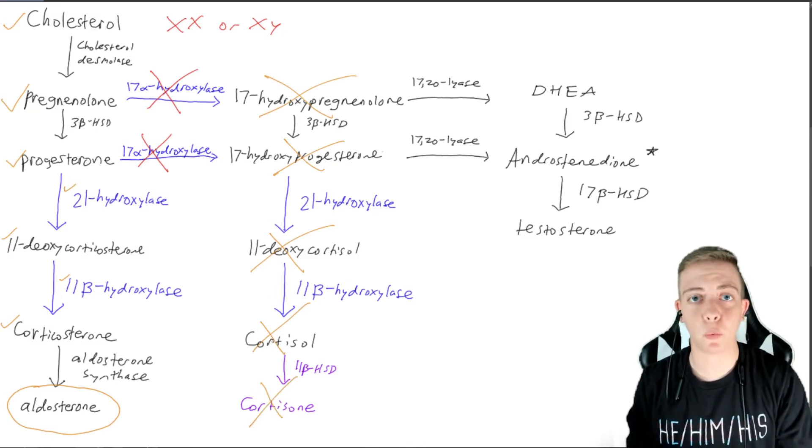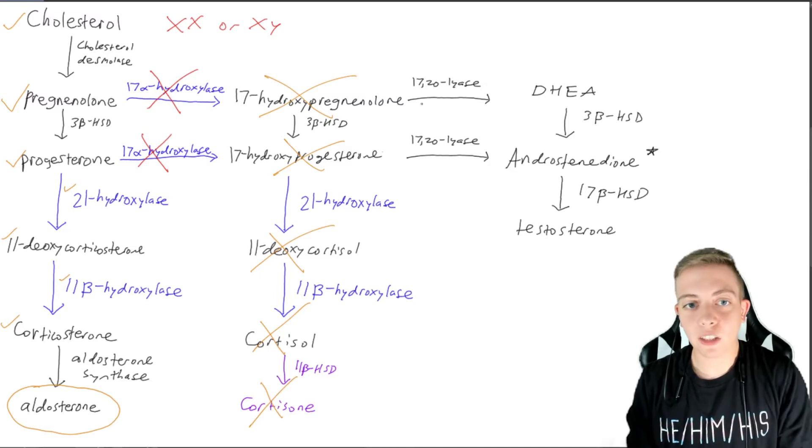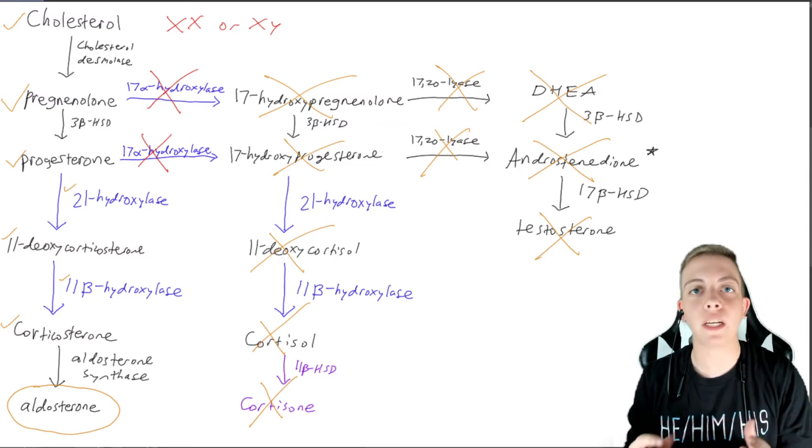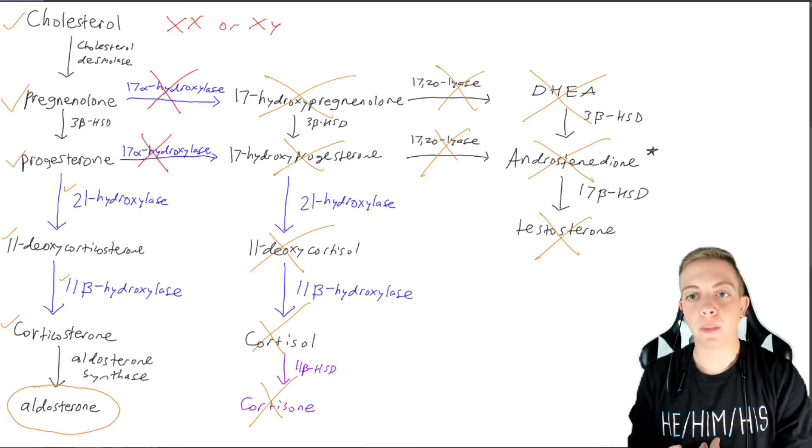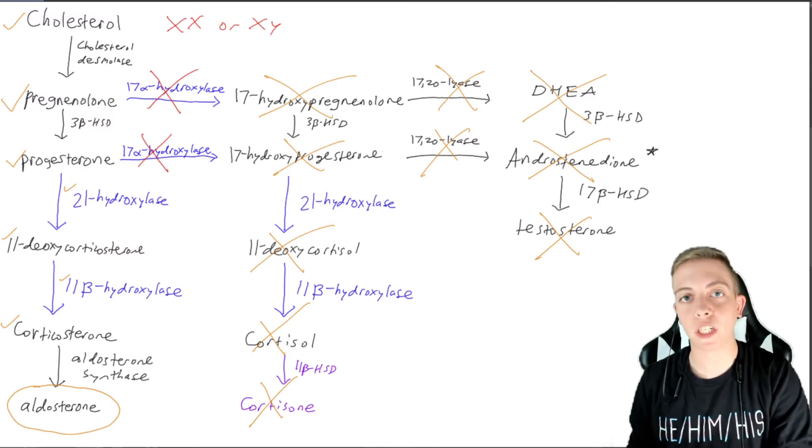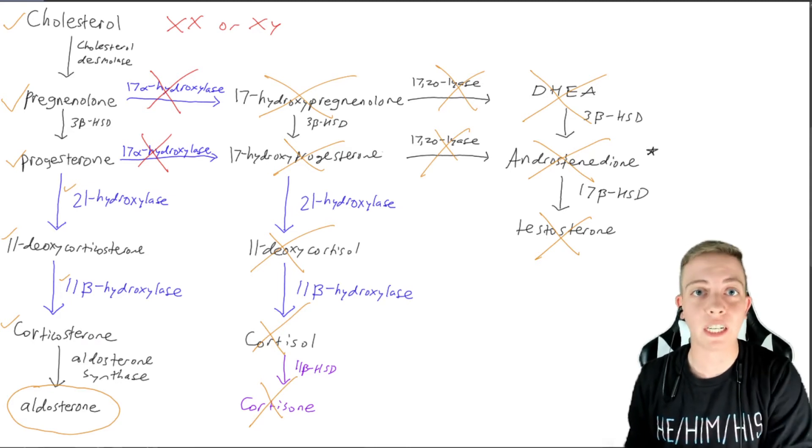So we're going to have some issues with inflammation and with time of stress and blood sugar. But can we use our 17-20 liase? No, because we couldn't take this initial step to even get there. So all of this is also irrelevant. So we can't make DHEA in the adrenal gland, we can't make androstenedione, and we can't make testosterone here.